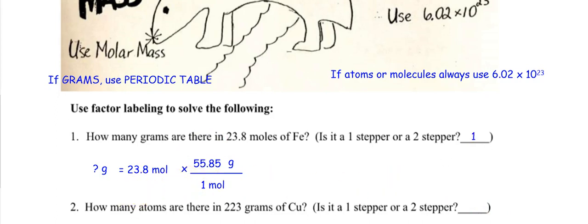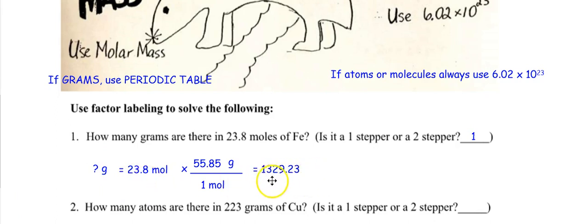So now what? It's on the top, so I'm going to multiply. Hopefully you got that too. Three sig figs — I need three sig figs. One, two, three — round up. And there you go.